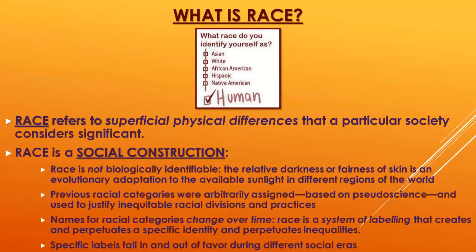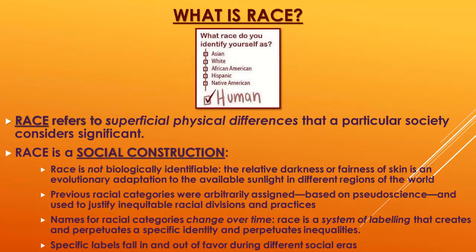Biologically, when biologists analyze our DNA and blood, there's no real biologically identifiable trait called race. It really just refers to the darkness or fairness of your skin, which comes down to our evolutionary adaptations to different habitats around the world over long spans of time. Racial categories differ across societies and have changed throughout U.S. history.